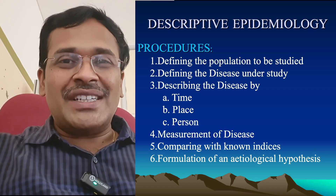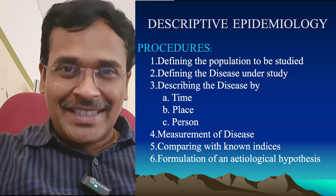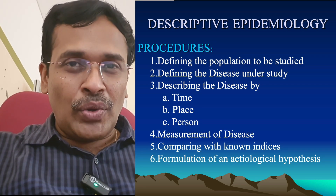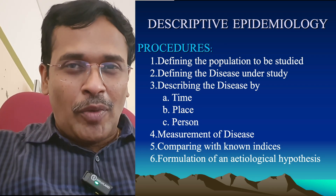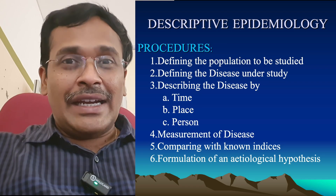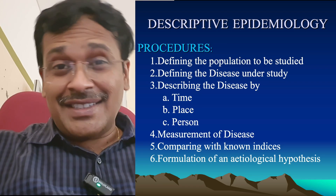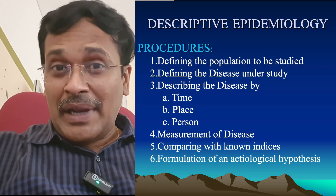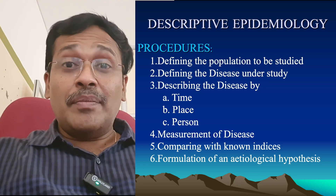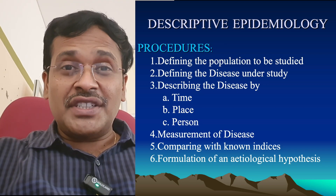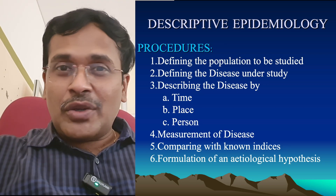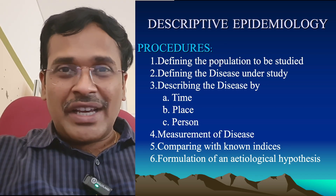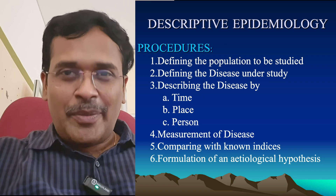Basically, in descriptive epidemiology, these are the six steps which we have to follow: defining the population to be studied, defining the disease under study, describing the disease by time, place and person, measurement of disease, comparing with known indices, and formulation of an etiological hypothesis.